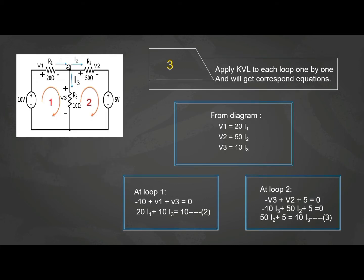Next, we can apply KVL to each loop one by one and we'll get correspondent equations. From the diagram, V1 equal to 20I1, V2 equal to 50I2, V3 equal to 10I3. At loop one, negative 10 plus V1 plus V3 equal to zero. So, we can substitute back the value of V1 and V3. So, we get 20I1 plus 10I3 equal to 10. That is our second equation.